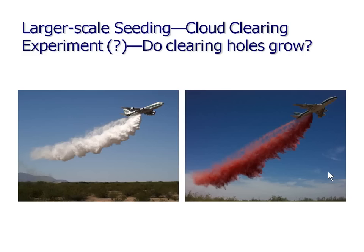One of the problems we see in stratocumulus clouds is that there's a lot of mesoscale structure. There have been many arguments that mesoscale structure itself is being modified by aerosols. So we said maybe we need a large-scale seeding cloud-clearing experiment. Here are some possible candidates — here's a 747 equipped with fire retardant, which is very hygroscopic as it turns out. There's also water, and water has been used as a seeding agent before. This is probably not serious, but there is this curious question as to why those pox and holes grow.